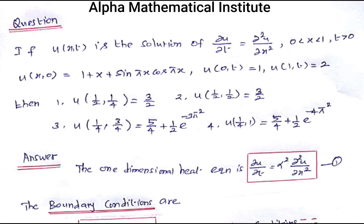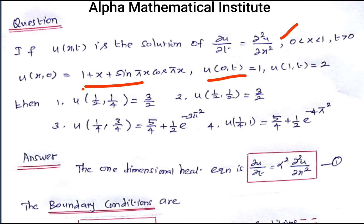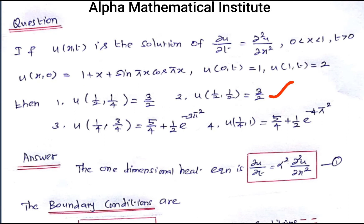If u is the solution of ∂u/∂t = ∂²u/∂x² where 0 < x < 1, t > 0, with the initial condition u = 1 + x + sin(πx)cos(πx), and boundary conditions u(0,t) = 1, u(1,t) = 2, then: u(1/2, 1/4) = 3/2; u(1/2, 1/2) = 3/2; u(1/4, 3/4) = 5/4 + (1/2)e^(−3π²/4); u(1/4, 1) = 5/4 + (1/2)e^(−4π²).